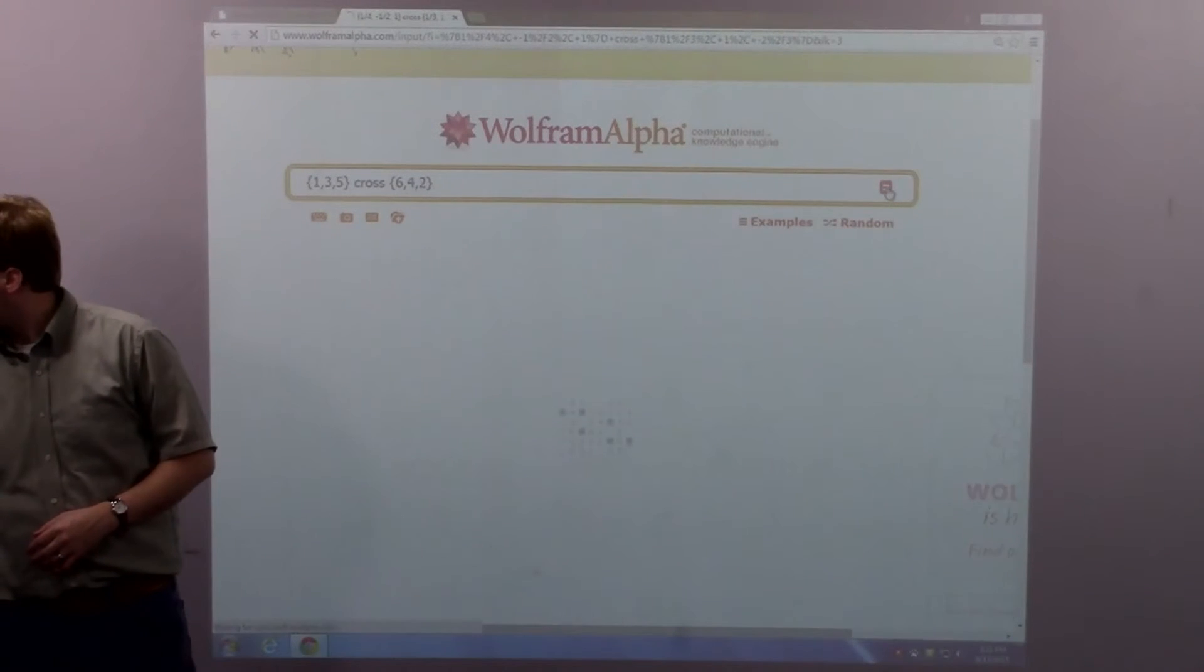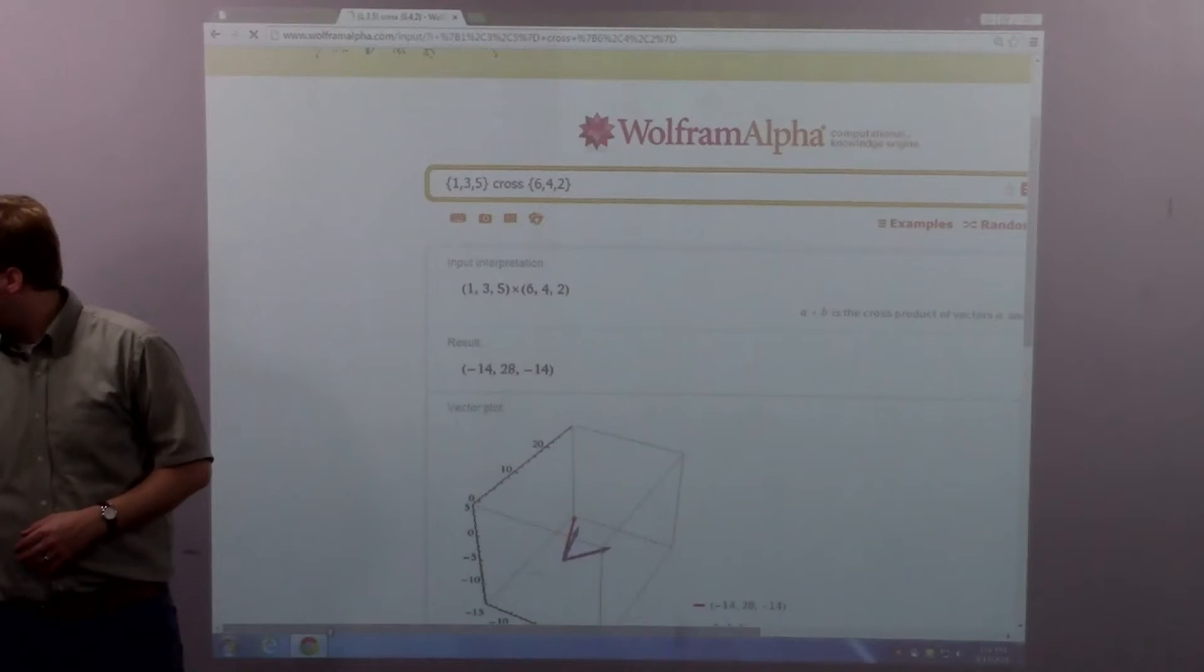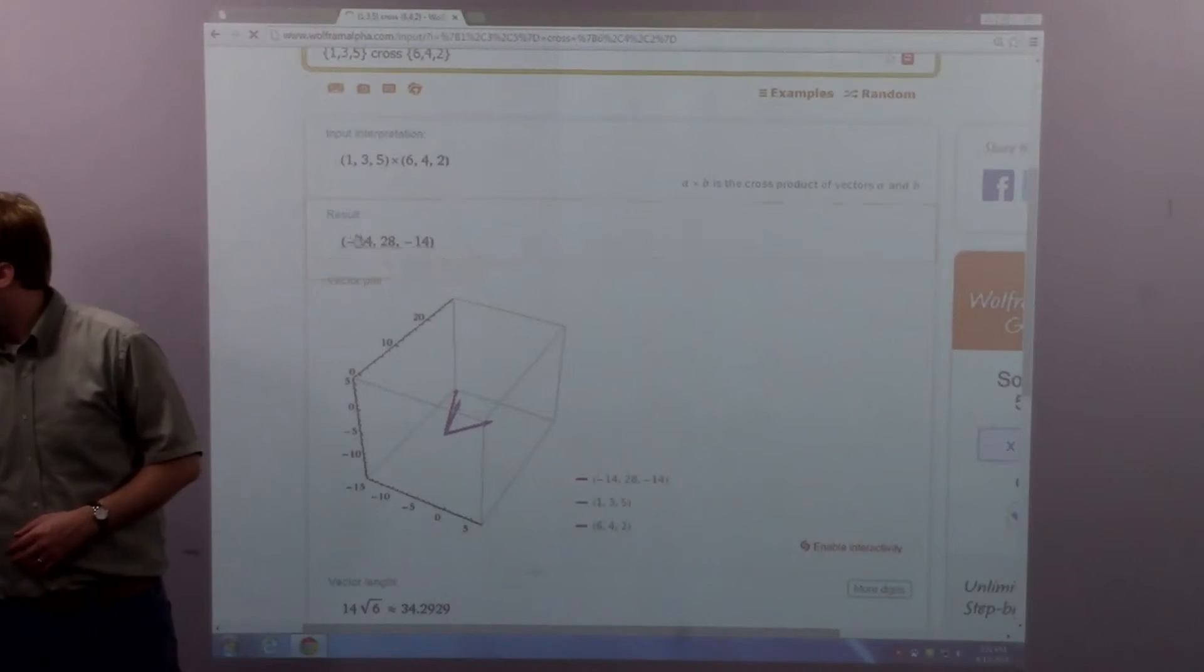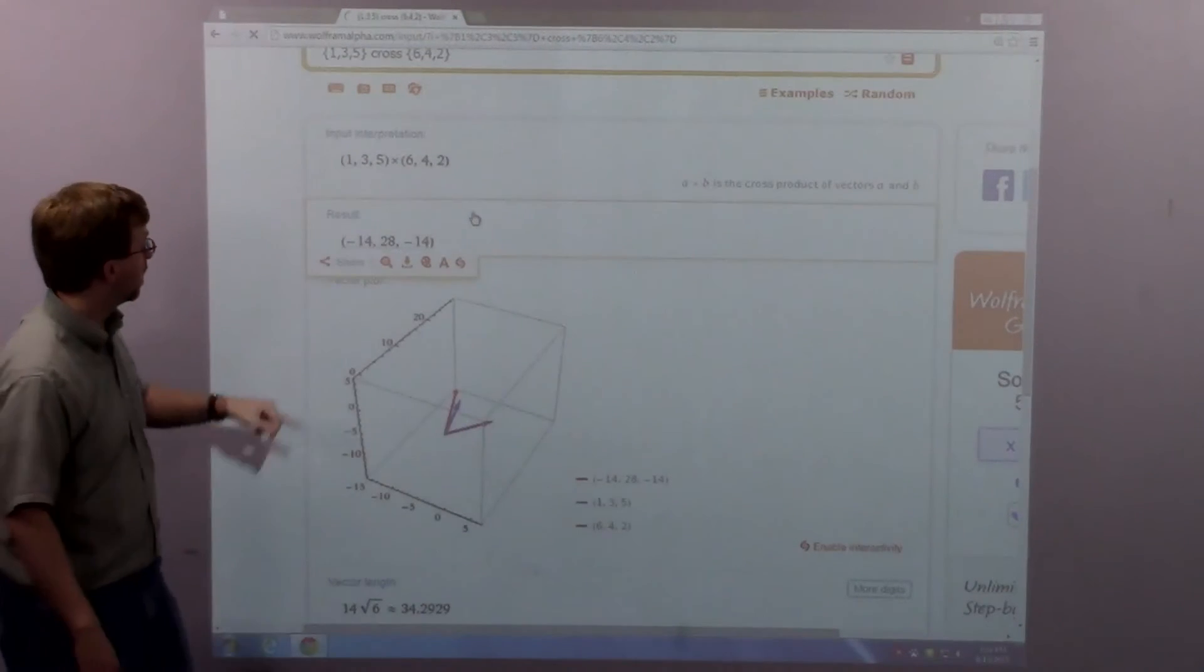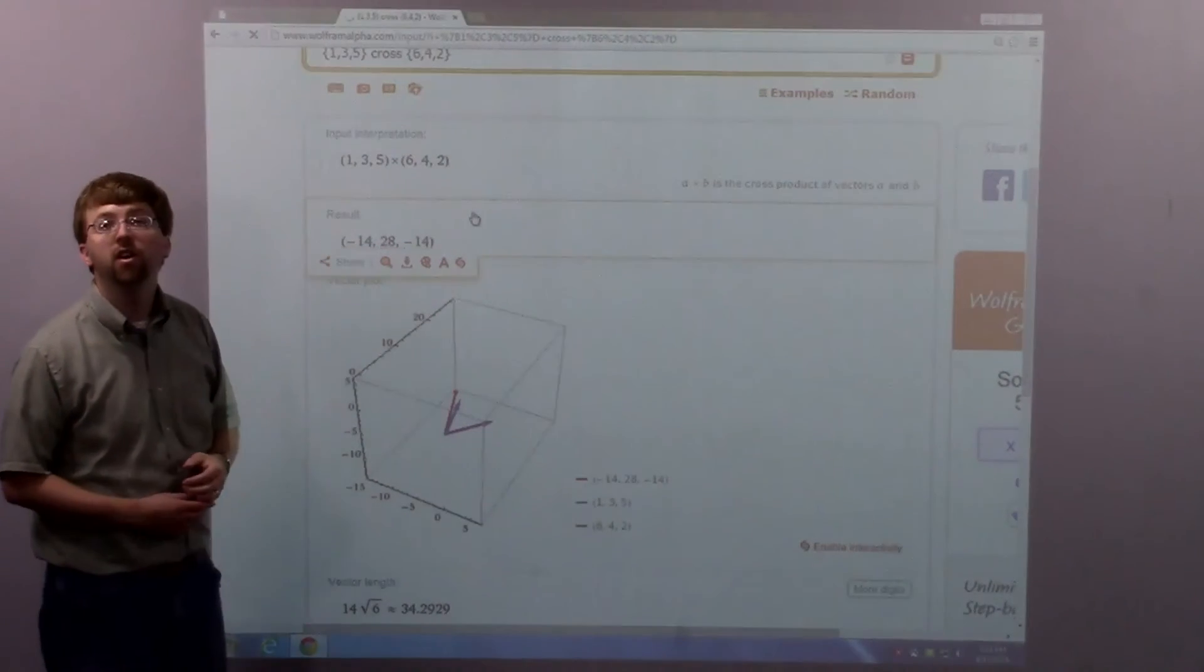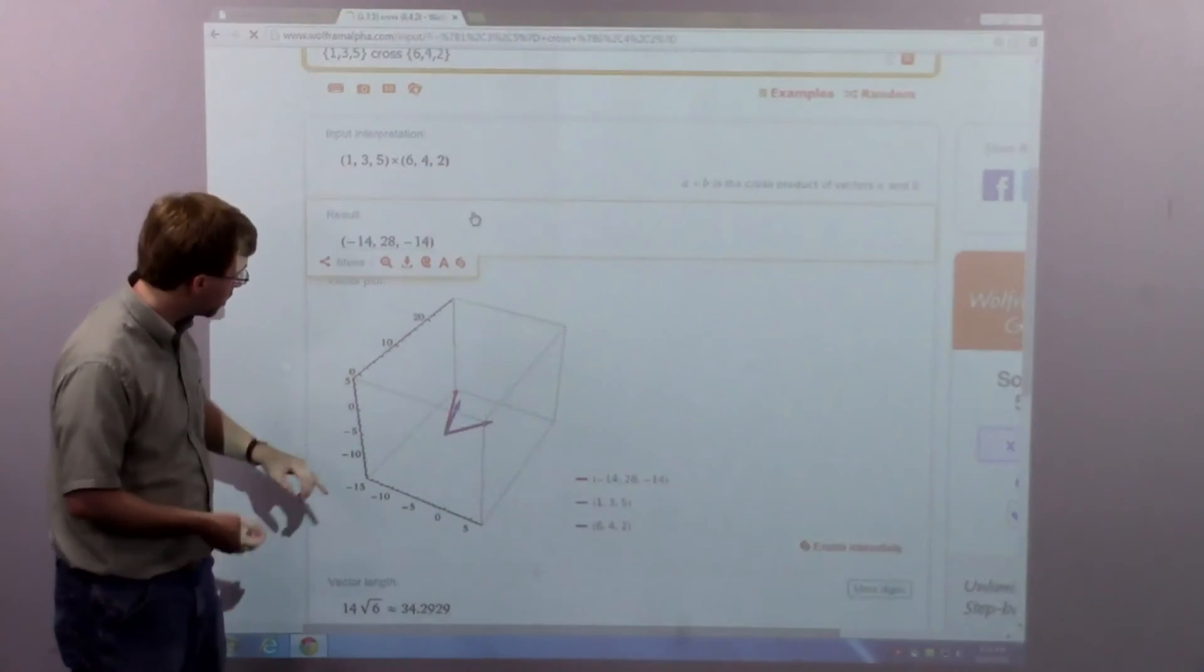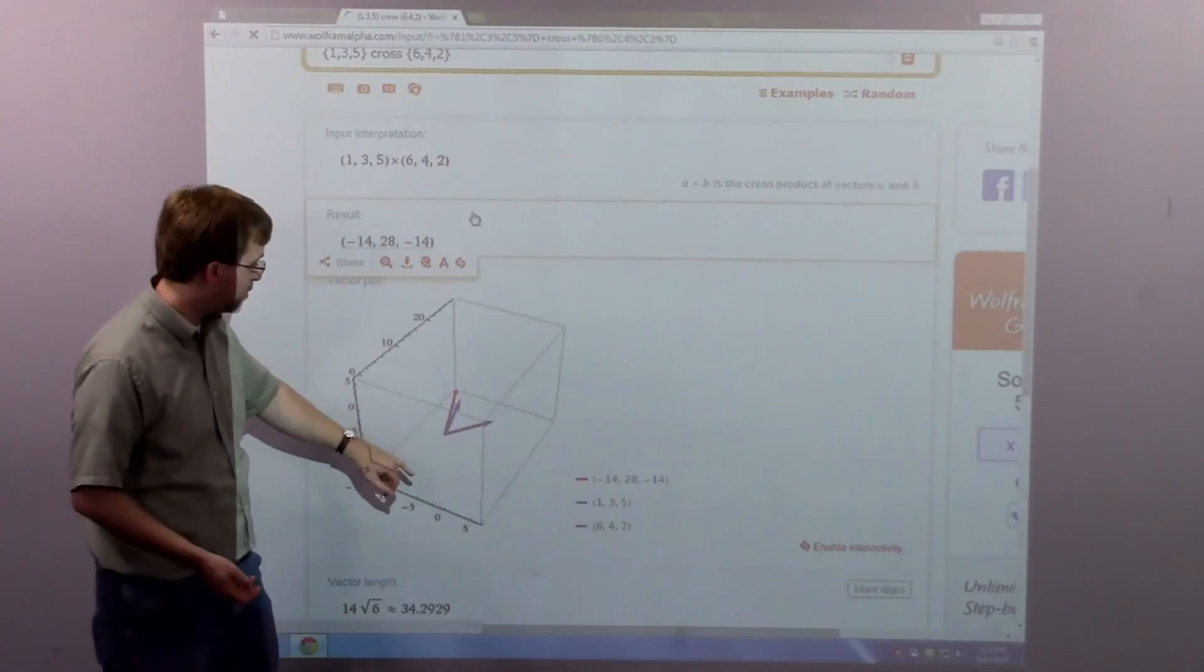If I hit the equal sign, it will provide me with an answer. This result down here, that is our answer. It is negative 14, 28, negative 14, which is our final solution here. It also offers us a diagram down here.